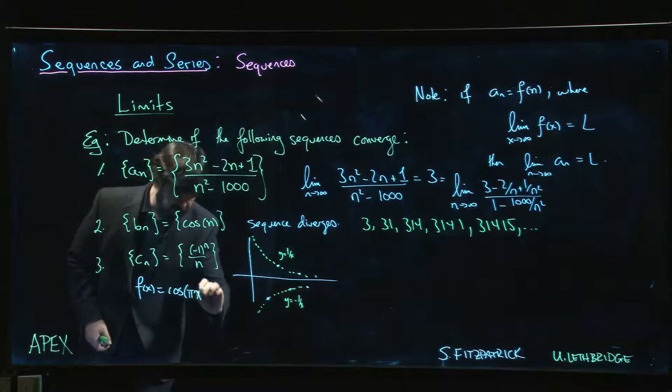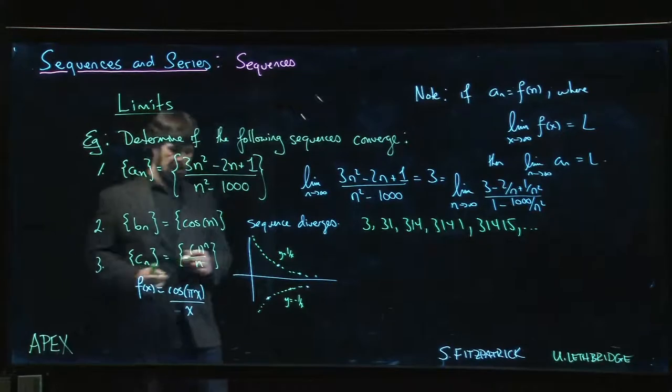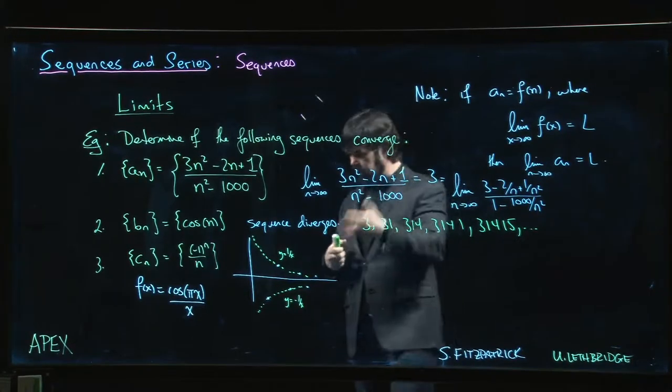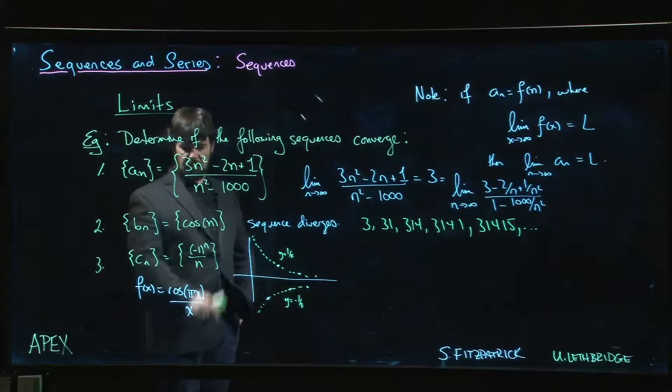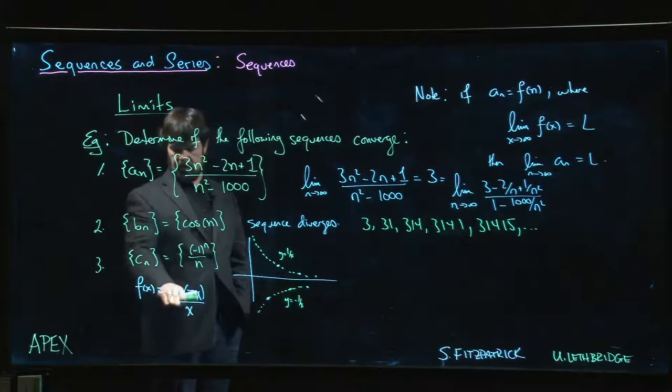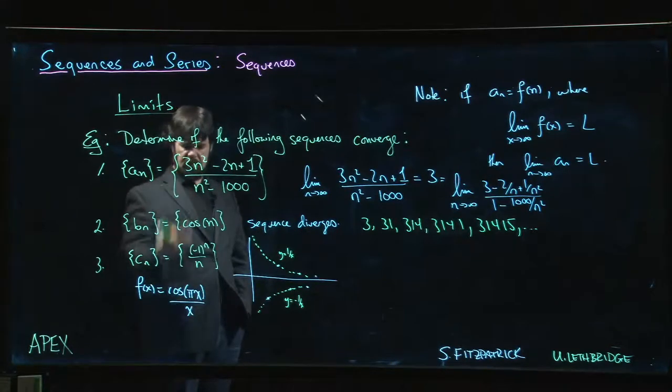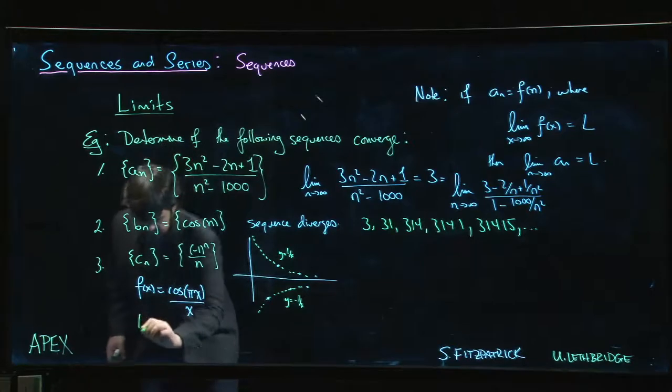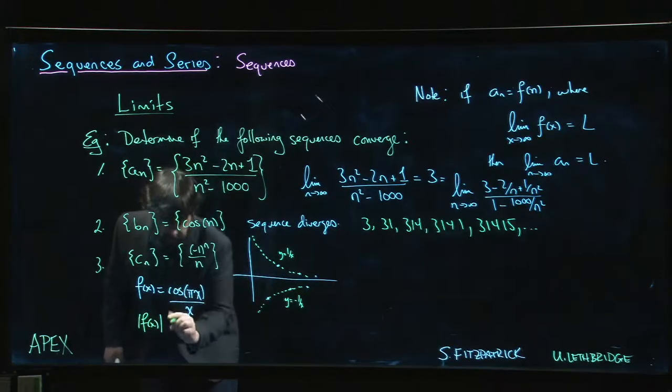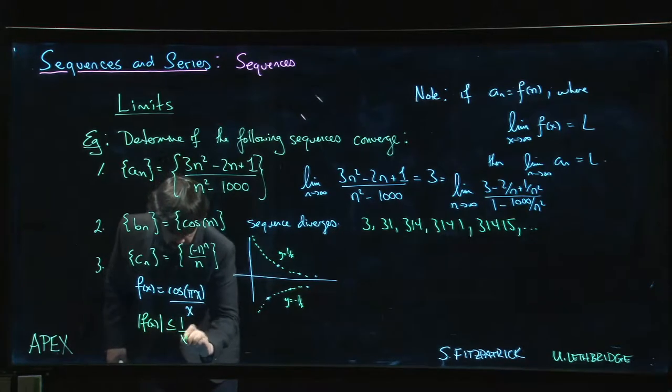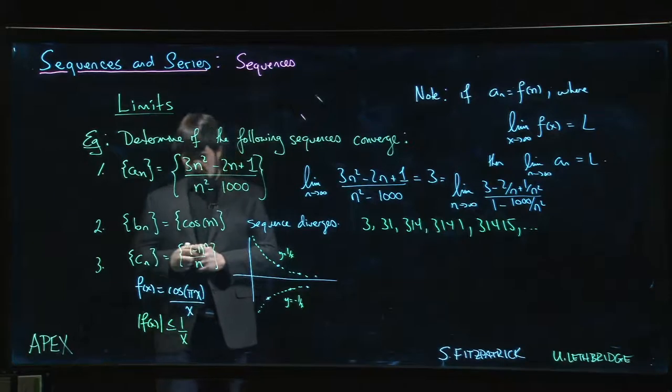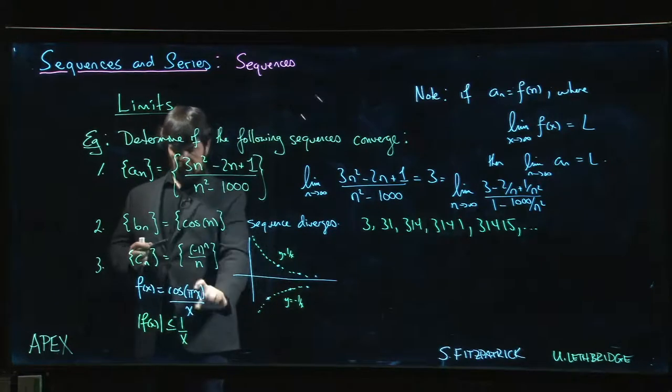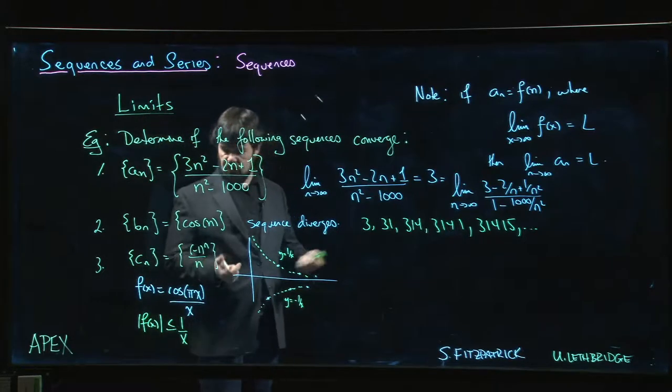Integer multiples of π, if we plug them into cosine, you get either 1 or -1. So there's a function of x that agrees with our sequence at every integer. If you take the limit of that, we go back to calc 1 methods. Squeeze theorem essentially is going to tell you, because the absolute value of this f(x)—well, absolute value of cosine is less than or equal to 1—so this is less than or equal to 1/x in absolute value. The function is sandwiched between -1/x on one hand and +1/x on the other. We know those both go to 0, so this has to go to 0 as well.